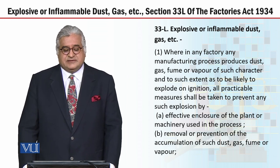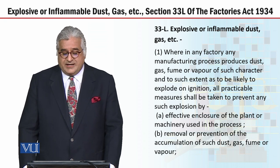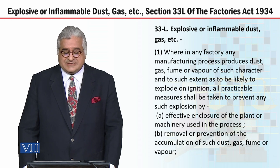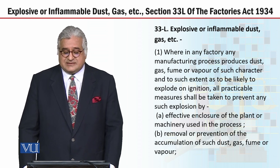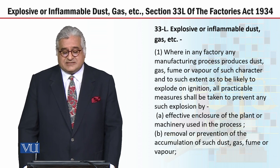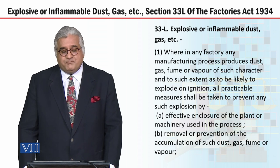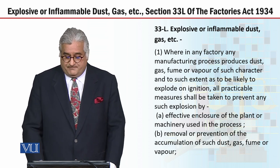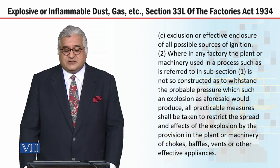Section 33L — Explosive or Inflammable Dust, Gas, etc. Subsection 1: Wherein any factory, any manufacturing process produces dust, gas, fume or vapour of such character and to such extent as to be likely to explode on ignition, all practicable measures shall be taken to prevent any such explosion by effective enclosure of the plant or machinery used in the process, by removal or prevention of the accumulation of such dust, gas, fume or vapour, or by exclusion or effective enclosure of all possible sources of ignition.